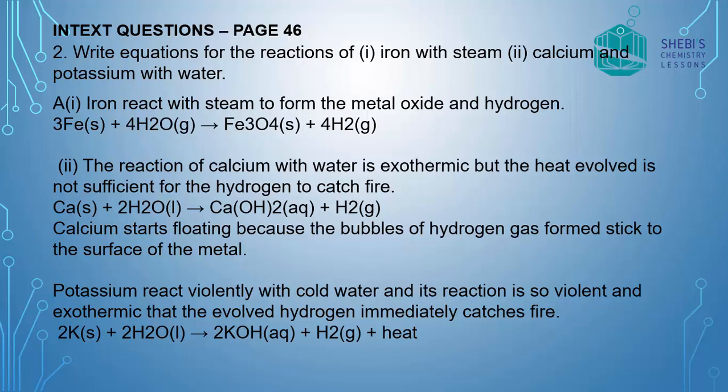And calcium reacts with water, which is also exothermic but the heat evolved is not sufficient for hydrogen to catch fire. So it is not a violent reaction. The hydrogen gas formed will stick on the metal calcium which will make calcium metal float on water. Potassium reacts very violently with even cold water and the reaction is so violent and exothermic that the evolved hydrogen immediately catches fire. So here potassium hydroxide and hydrogen gas and heat energy are evolved. In the case of calcium also heat energy is evolved.